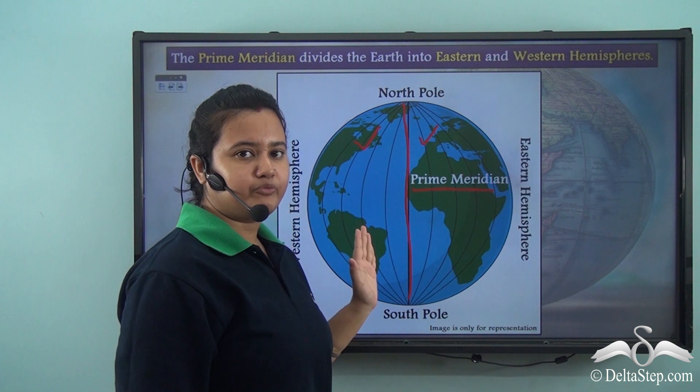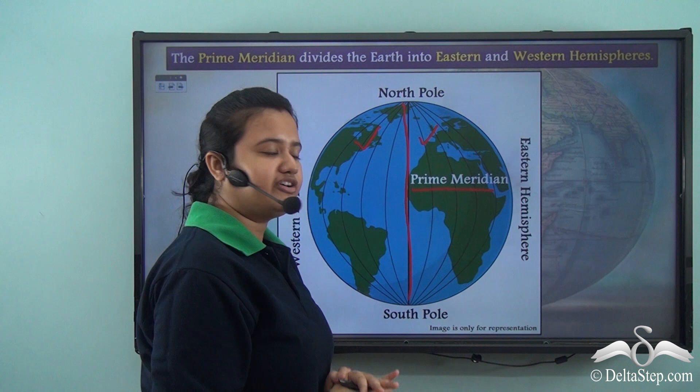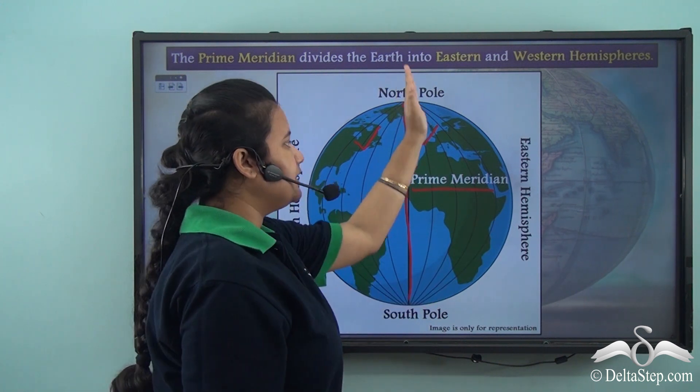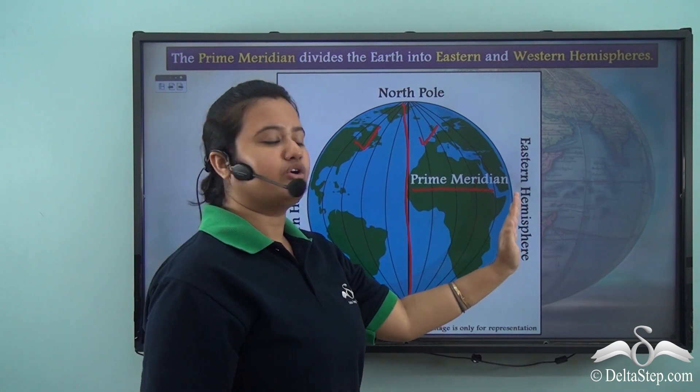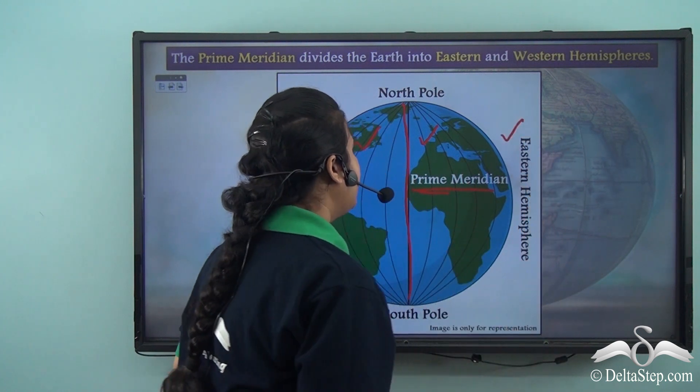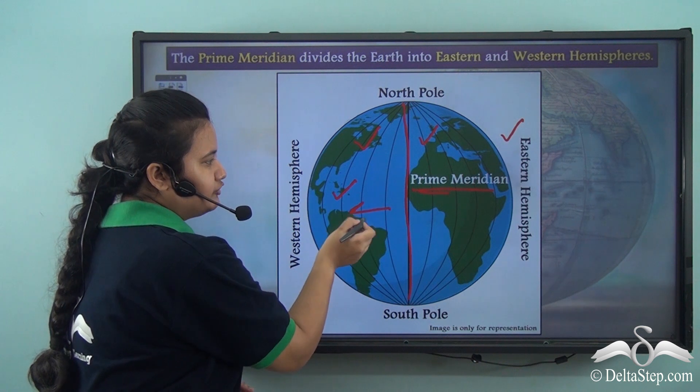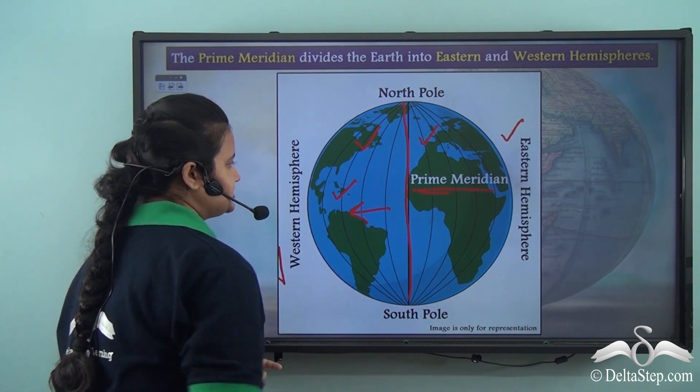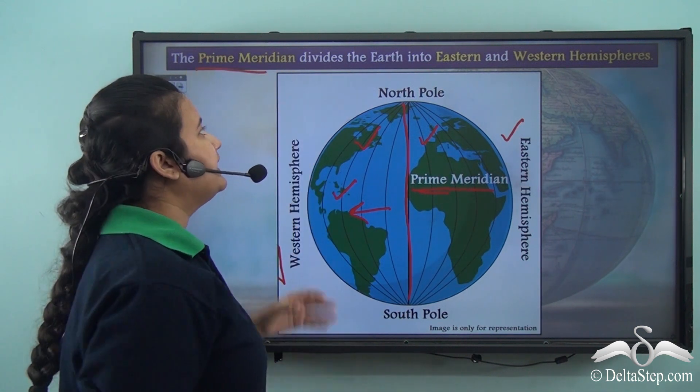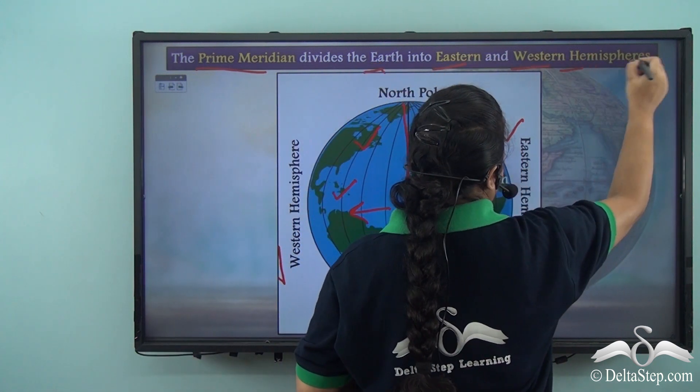Just like that piece of paper, if we fold this globe along this line, then we shall find that this side is equal to this side. Since this side lies to the east of the prime meridian, this side is the eastern hemisphere and since this side lies to the west of prime meridian, this is the western hemisphere. Prime meridian is a longitude that divides the earth into eastern and western hemispheres.